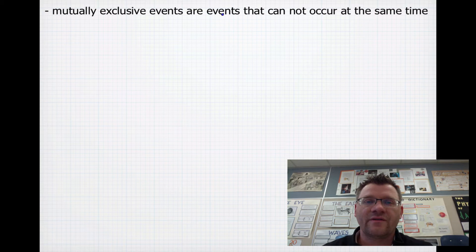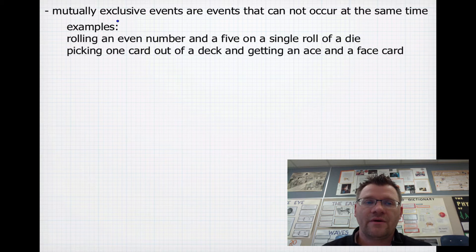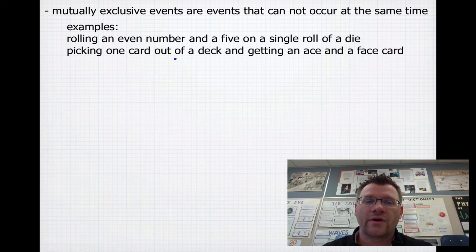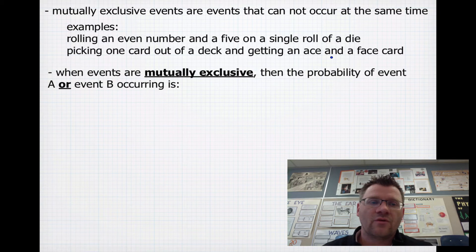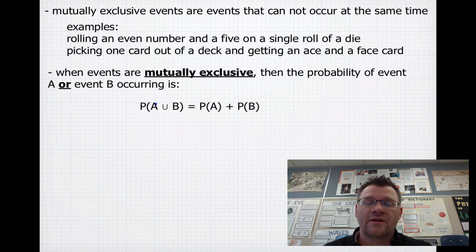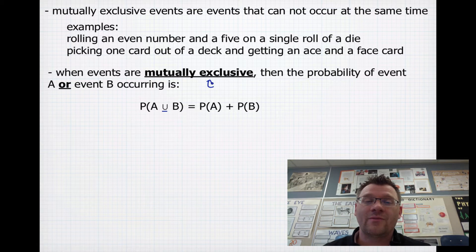Mutually exclusive events are events that cannot occur at the same time. For example, rolling an even number and a 5 with a single roll of a dice — that can't happen. Or picking one card out of a deck and getting an ace and a face card — that can't happen either. When events are mutually exclusive, the probability of event A or event B occurring is the probability of A plus the probability of B. This symbol means 'or.' Mutually exclusive means they have no elements in common.